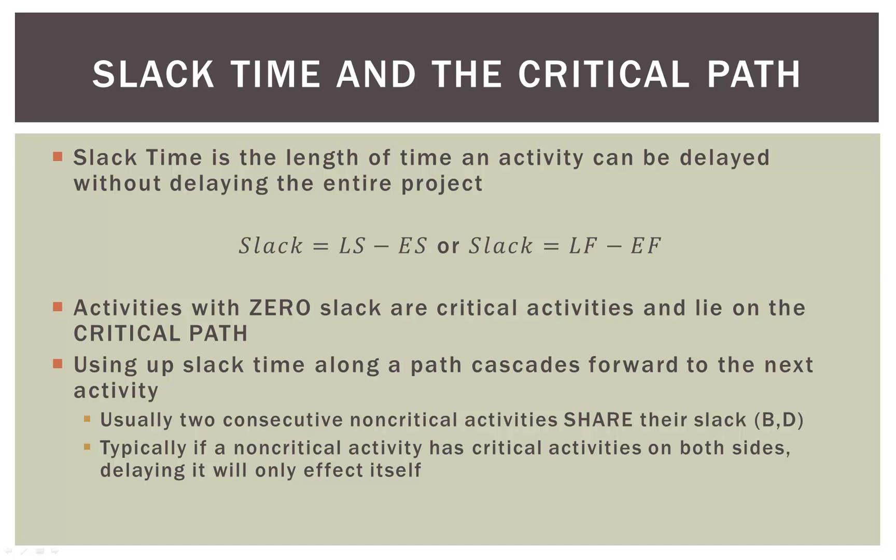That's why they're called critical. Now if an activity has some slack time, it can affect the activities next to it — it's kind of like slack in a rope. If you pull one end of a slack rope, it pulls the entire rope tight. So if we have two consecutive non-critical activities that have slack, they actually share that slack. If B and D each have one week of slack and they're next to each other, and we delay B by a week, D also loses its week of slack because it was dependent on B.